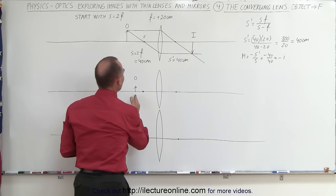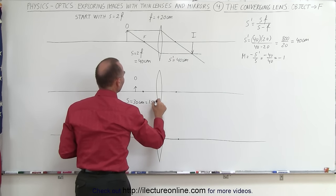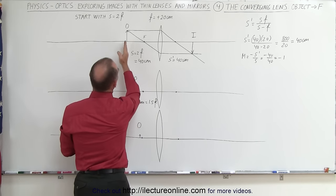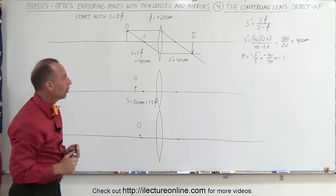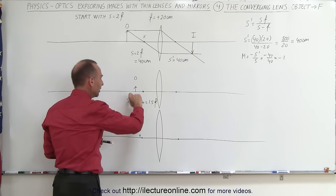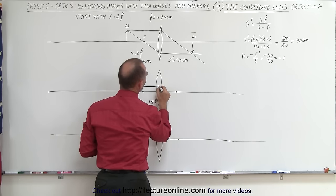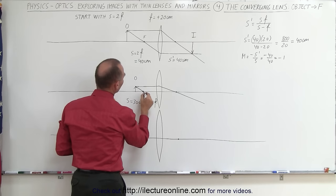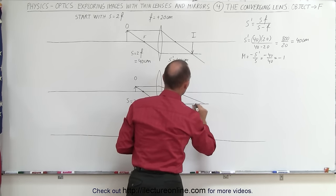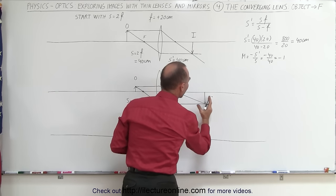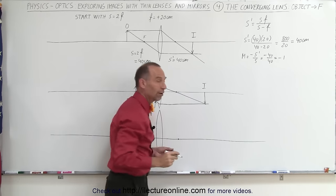Now let's move the object to a distance of 30 centimeters — S = 30 cm, which is 1.5 times the focal length. We moved it exactly halfway between where it was before and the focal point. Graphically — and note I did make the object shorter here to make it easier to draw — the first ray is parallel to the optical axis and bends to the focal point. The second goes through the focal point until it hits the lens. Notice this is a much steeper line, and the two rays will not meet until a point farther away, so the image moves farther from the lens.